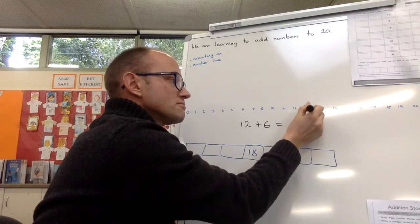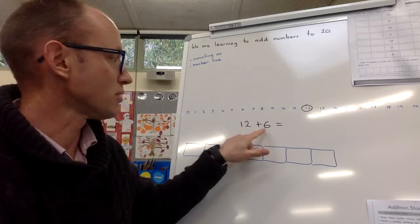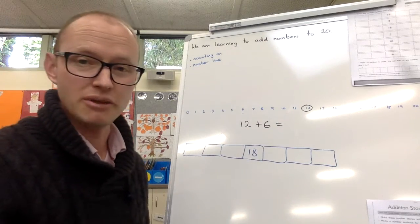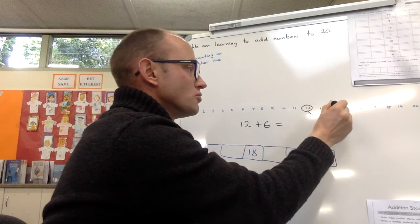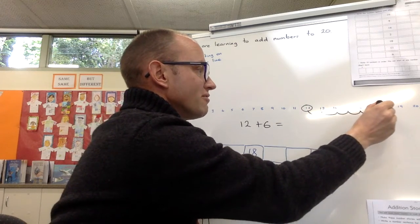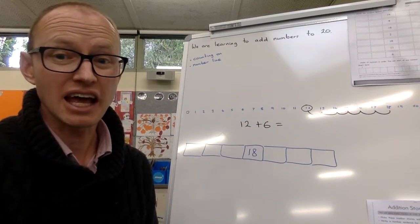So put my circle around 12, plus 6 more. So I'm at 12, means you need to do 6 more jumps. [counts 1, 2, 3, 4, 5, 6] 12 plus 6 equals, that's it, 18.